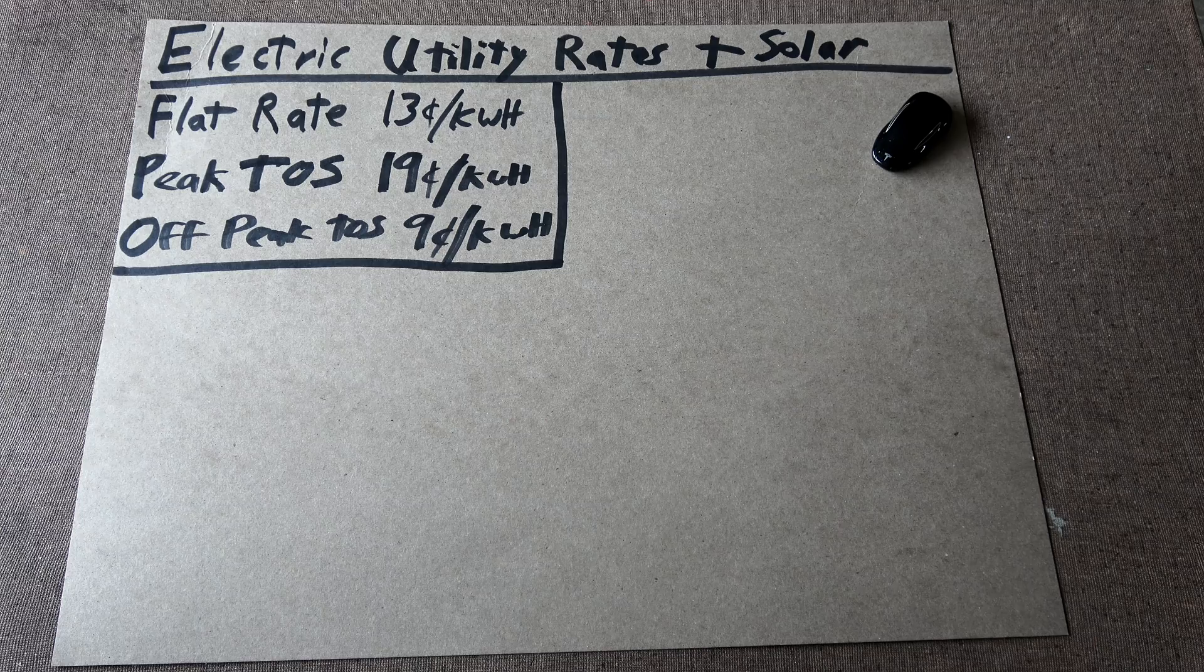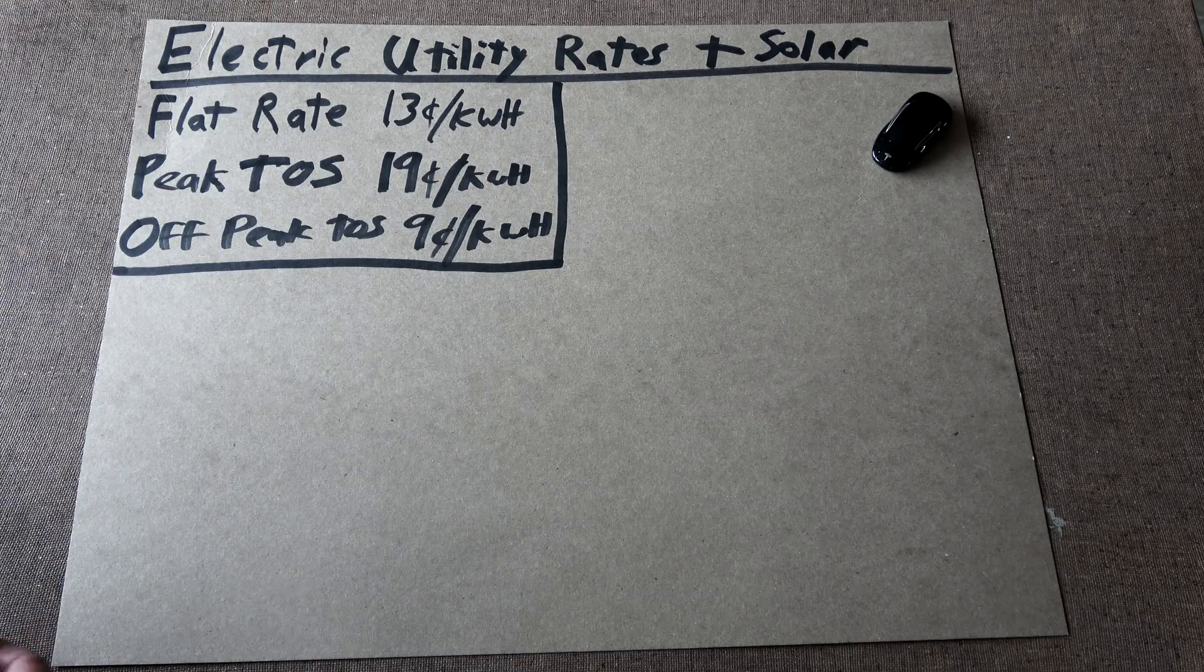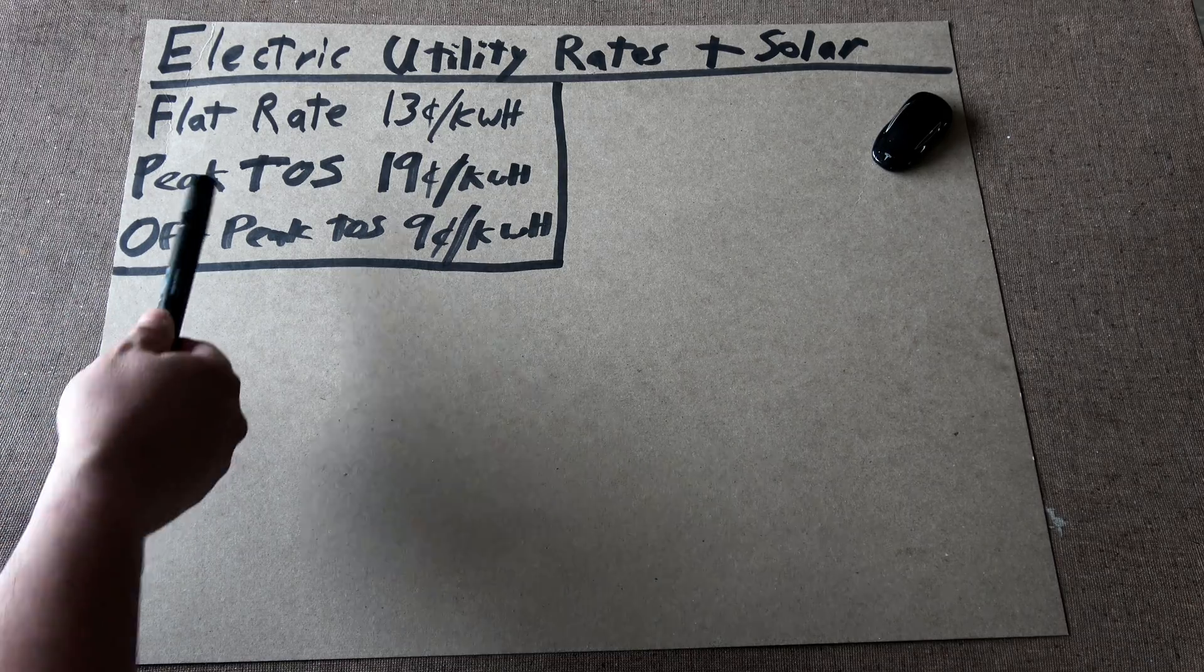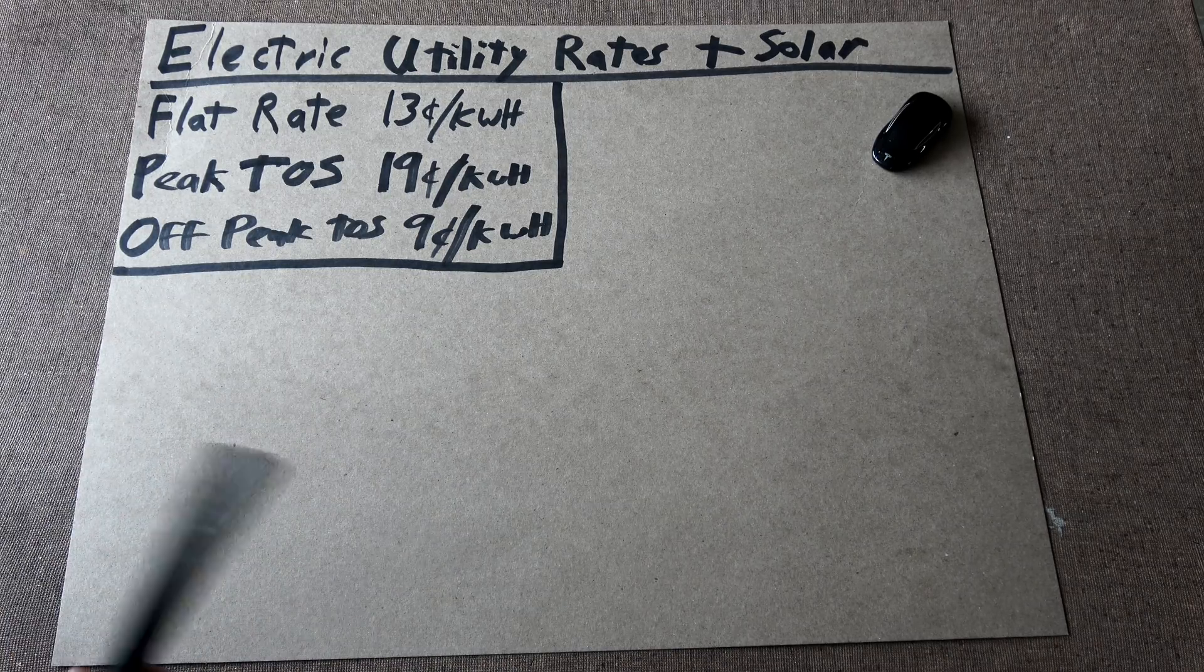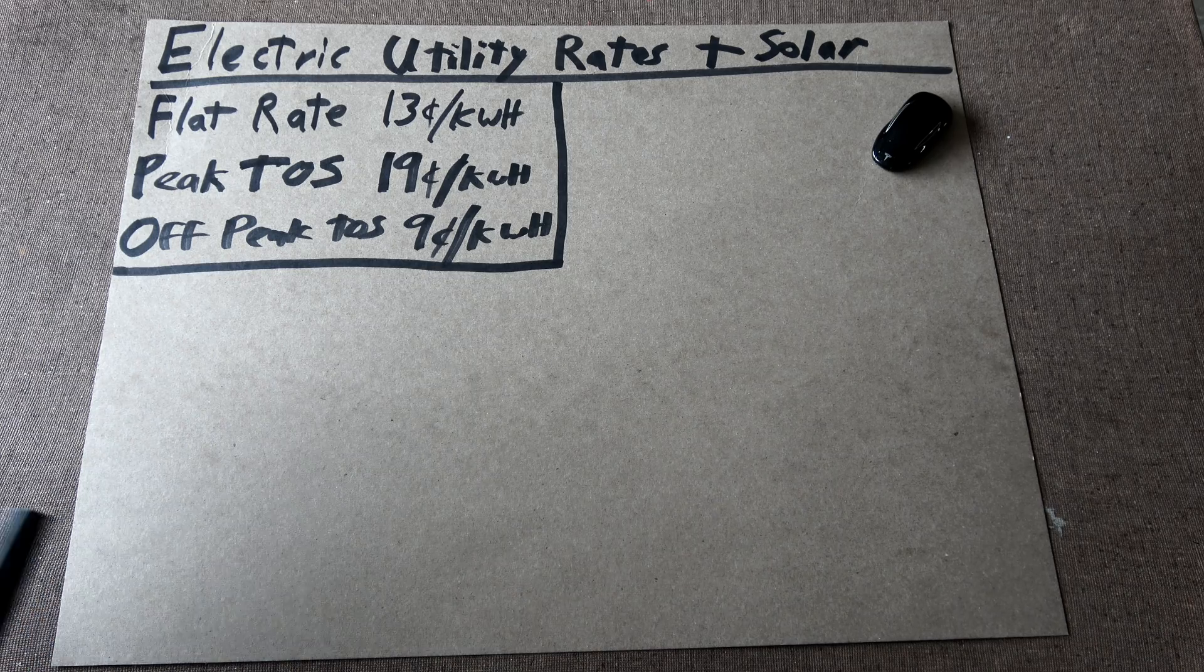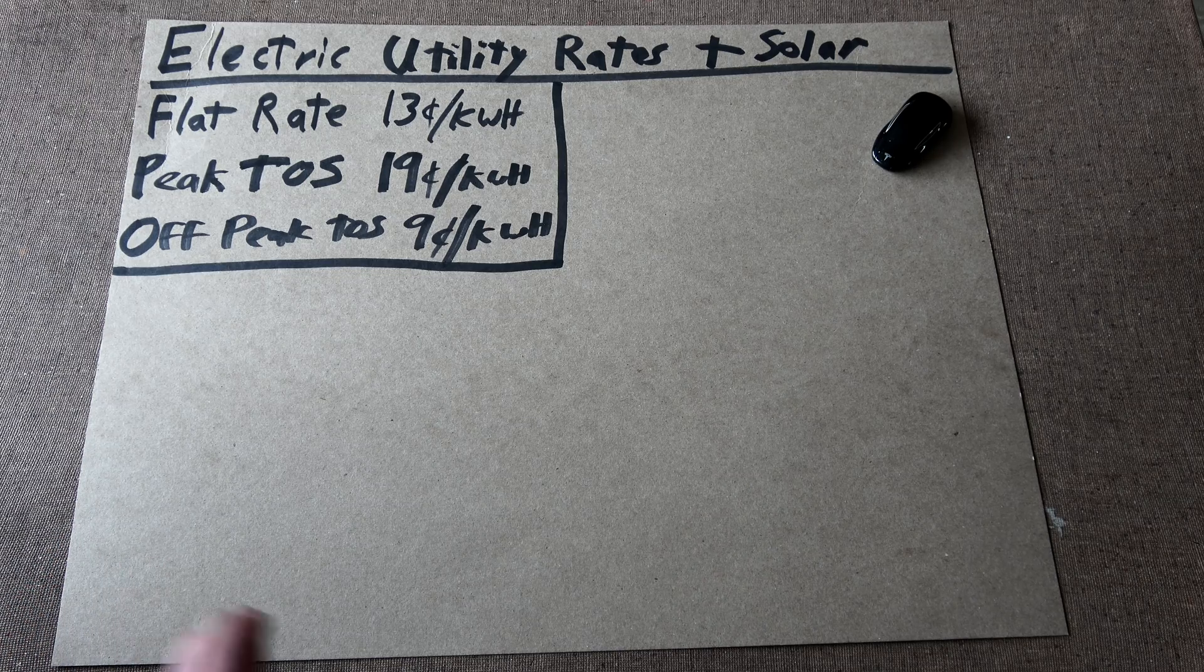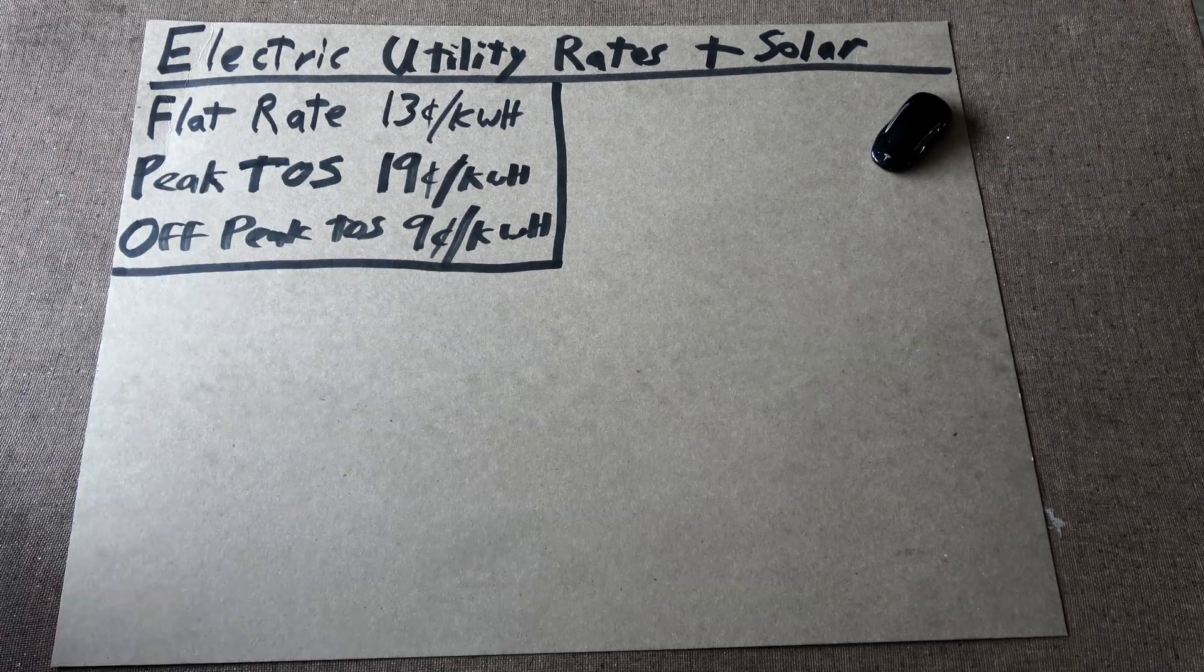Let's first look at the rates. I've rounded to the nearest cent. For flat rate, 13¢/kWh because it's actually like 13 point something. Peak TOS 19¢/kWh and off-peak TOS 9¢/kWh. Now, the best bet if you have a system that's really not overproducing and it's about breaking even with how much power you're using on a monthly basis, then flat rate is actually where you want to be.